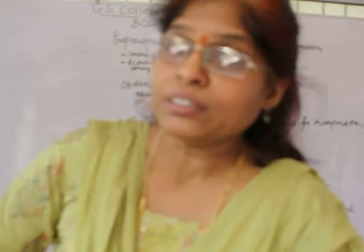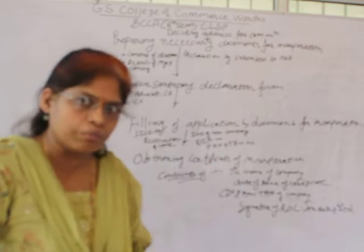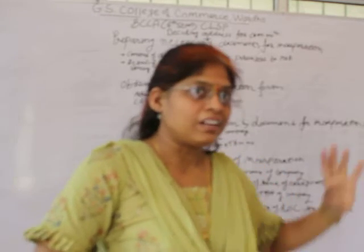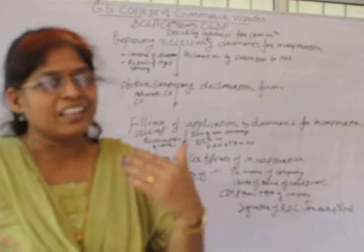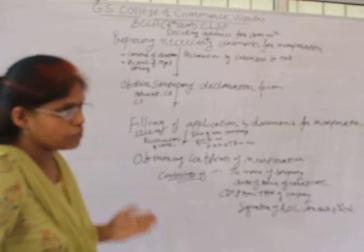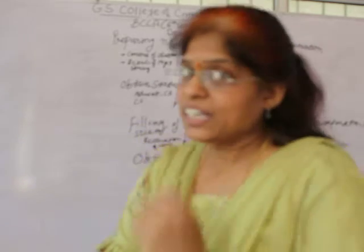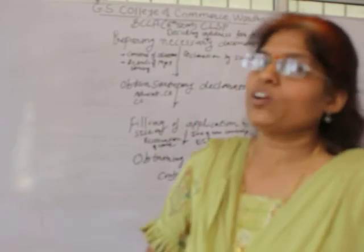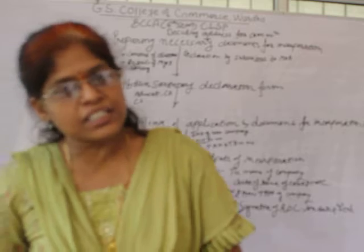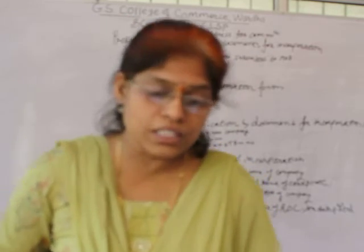Yesterday we started with the 11 steps. There are a total of approximately 11 steps in the formation of a company. Different books mention different steps, but as per the Companies Act 2013, the latest framework regarding incorporation and formation of the company contains these steps. Continuing from the last lecture, I covered 6 steps out of the total 11. Starting with obtaining the DSC — that is, the Digital Signature Certificate.